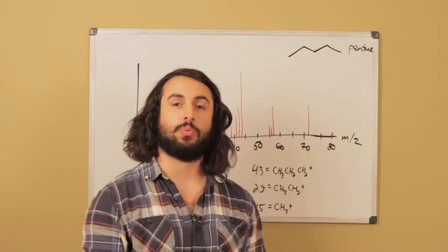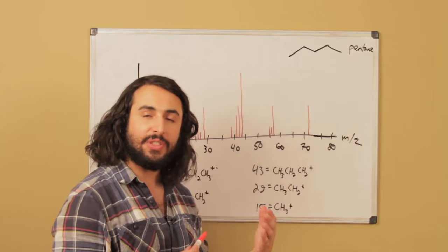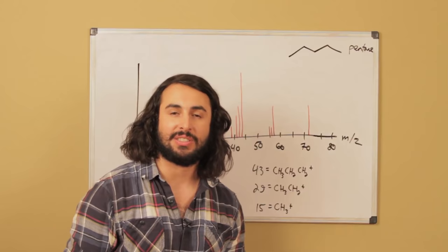the mass to charge ratio of each of these bits. So m over z is the mass to charge ratio, and if these have a single charge or plus one charge, then we can essentially think of this as the molecular mass of each little bit, each little chunk of the molecule.